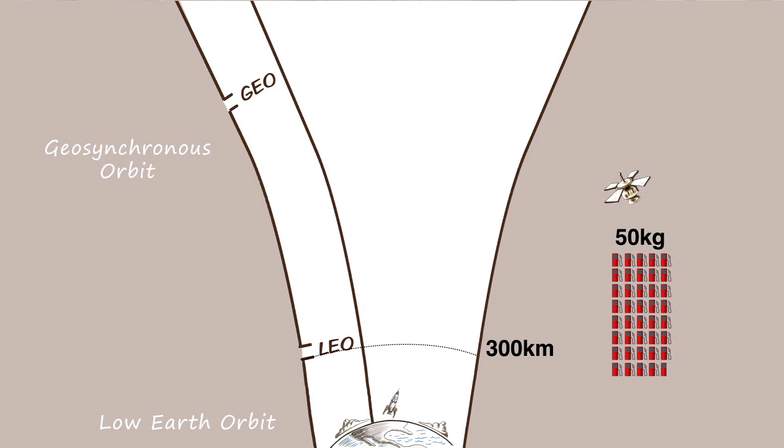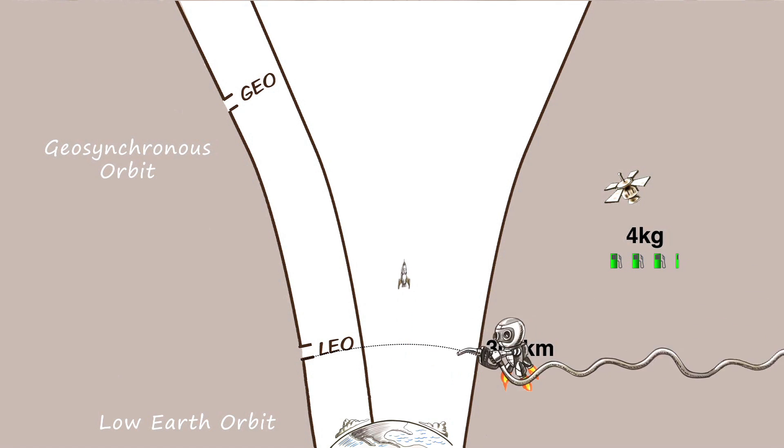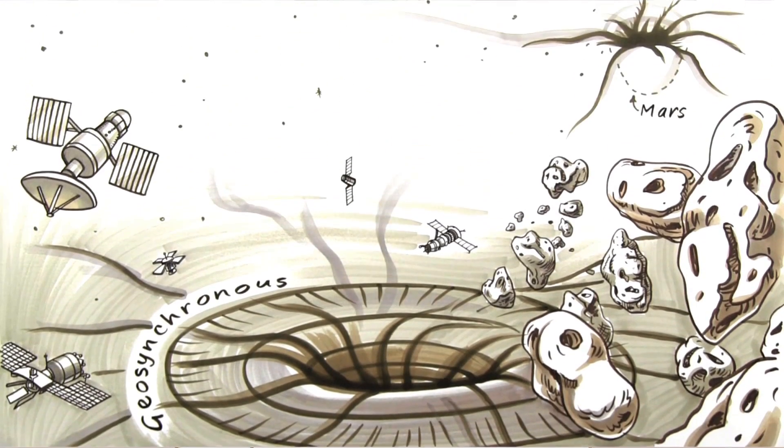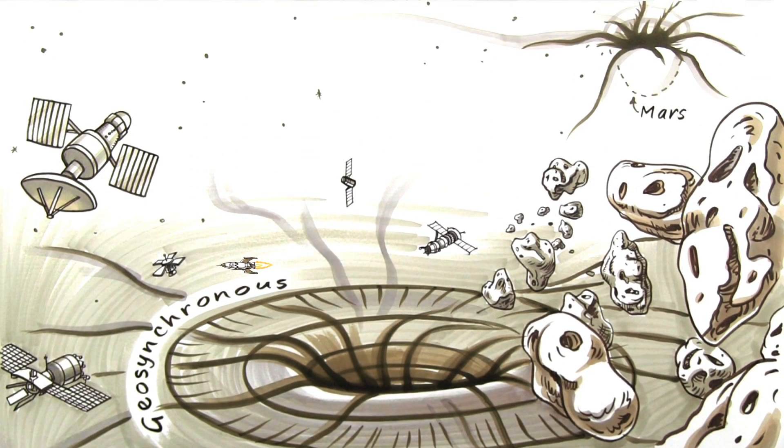It takes 50 kilos of propellant to deliver just one kilo to LEO. But four more would get you the next 35,000 kilometers, and two more, the last 300 million, to Mars, to the asteroids, to anywhere in the inner solar system.